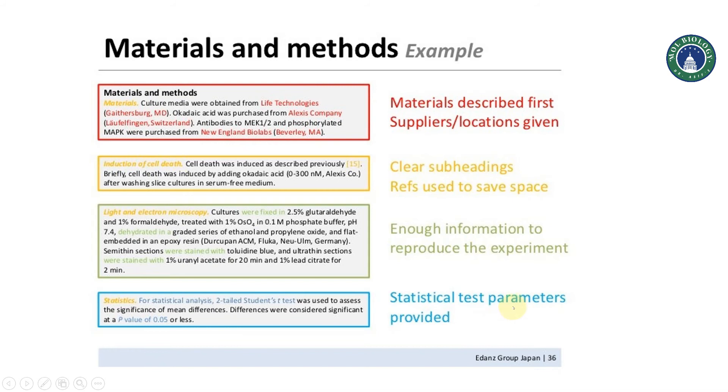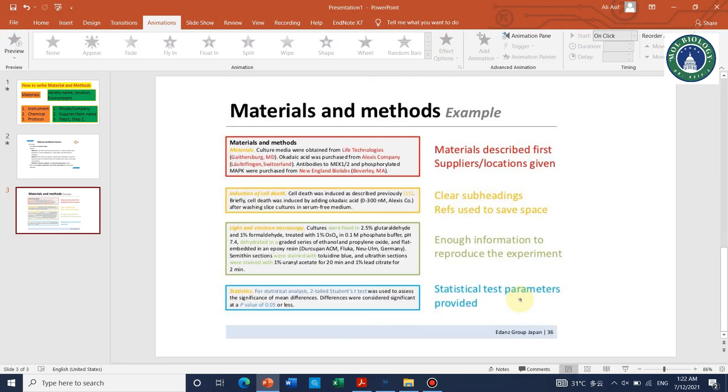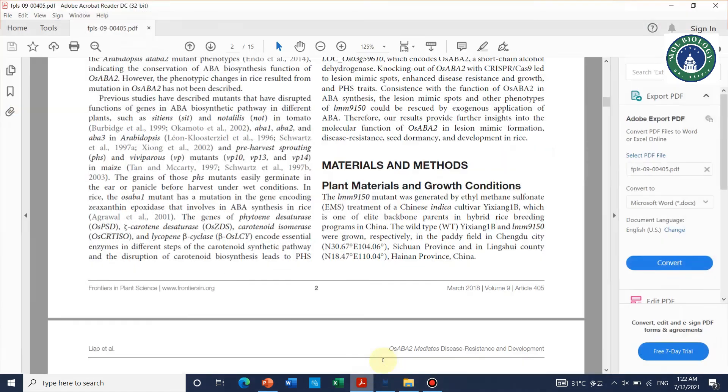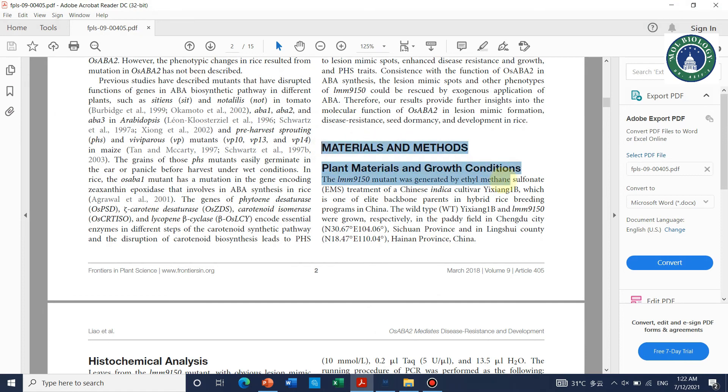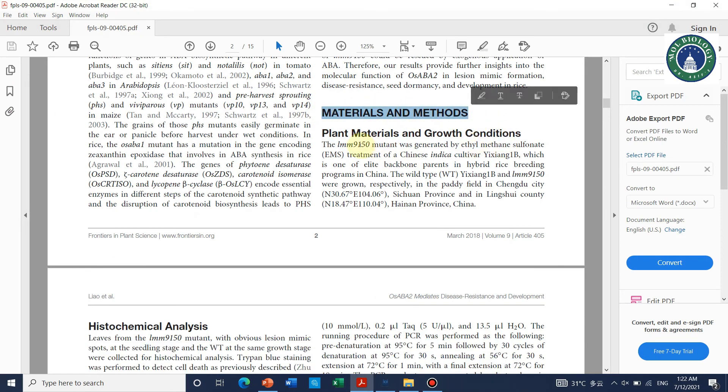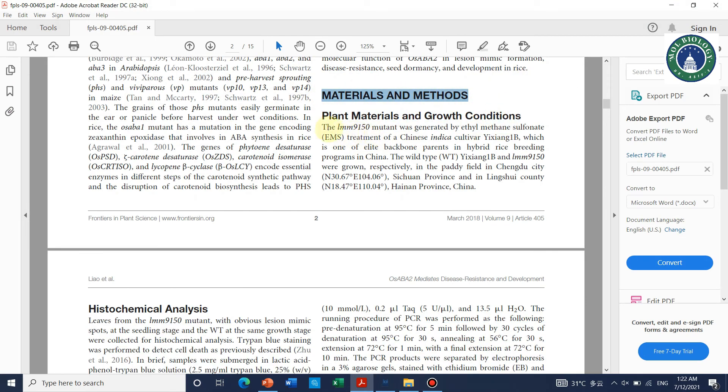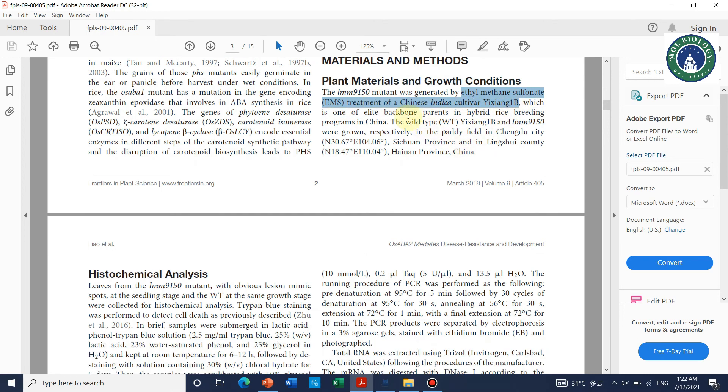Now let's see an example of real material method section. Here is one of my papers. Here we can see that this is the material method section of a published research article. Here we are using a mutant LMM915 - how we get, I mean this is the variety name and its characteristics and where it was. It was in Chengdu City, Sichuan Province, Lingshui County, and Hainan Province of China.